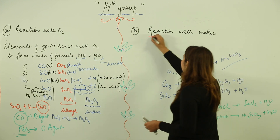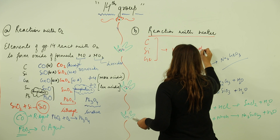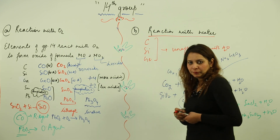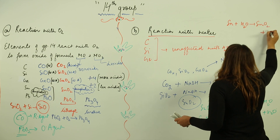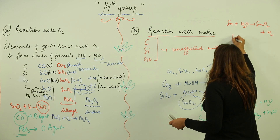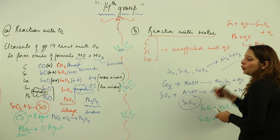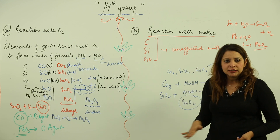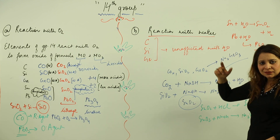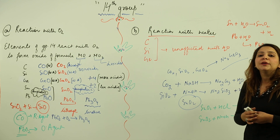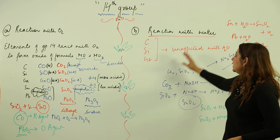Now the next property is reaction with water. The first three members — carbon, silicon, and germanium — remain unaffected by water, so no reaction takes place. Tin reacts with water giving tin dioxide and hydrogen gas. Lead begins reacting with water to form its oxide, but this oxide forms a thin layer on the surface, making lead passive, so further reaction is prevented.